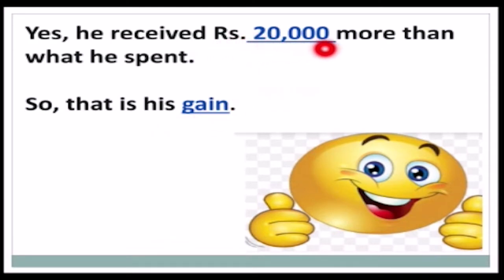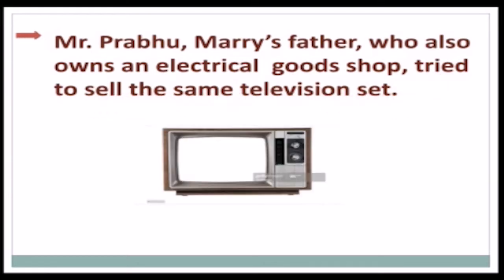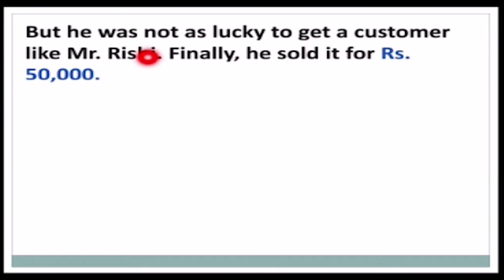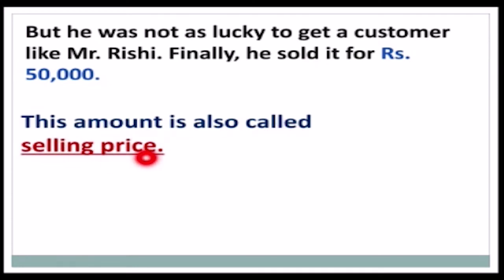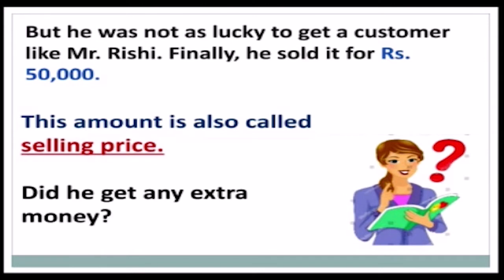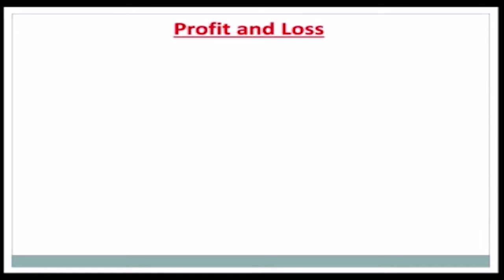Did he get any extra money? Yes — he received rupees 20,000 more than what he spent, so that is his gain. Now another example: Mr. Prabhu's father, who also owns an electrical goods shop, tried to sell the same television set but was not as lucky. He finally sold it for rupees 50,000. Did he get any extra money? No — in fact he got rupees 10,000 less than the cost price, so there is a loss of rupees 10,000.